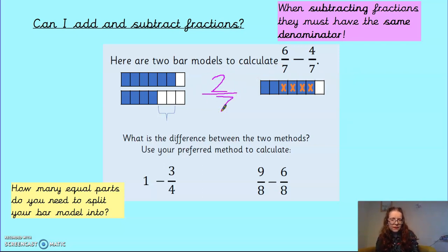So my answer is going to be 2 sevenths. Okay. What do you think is the difference between these two methods? Have a think about it. Have a decide which one you think is going to be most useful, is going to be easiest for you to do.